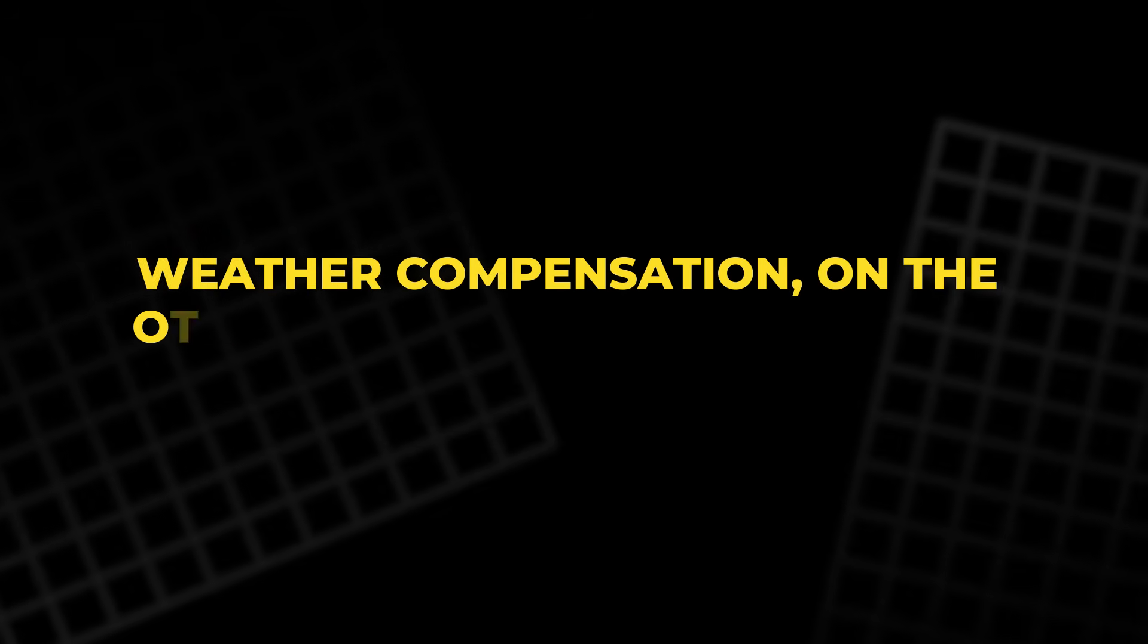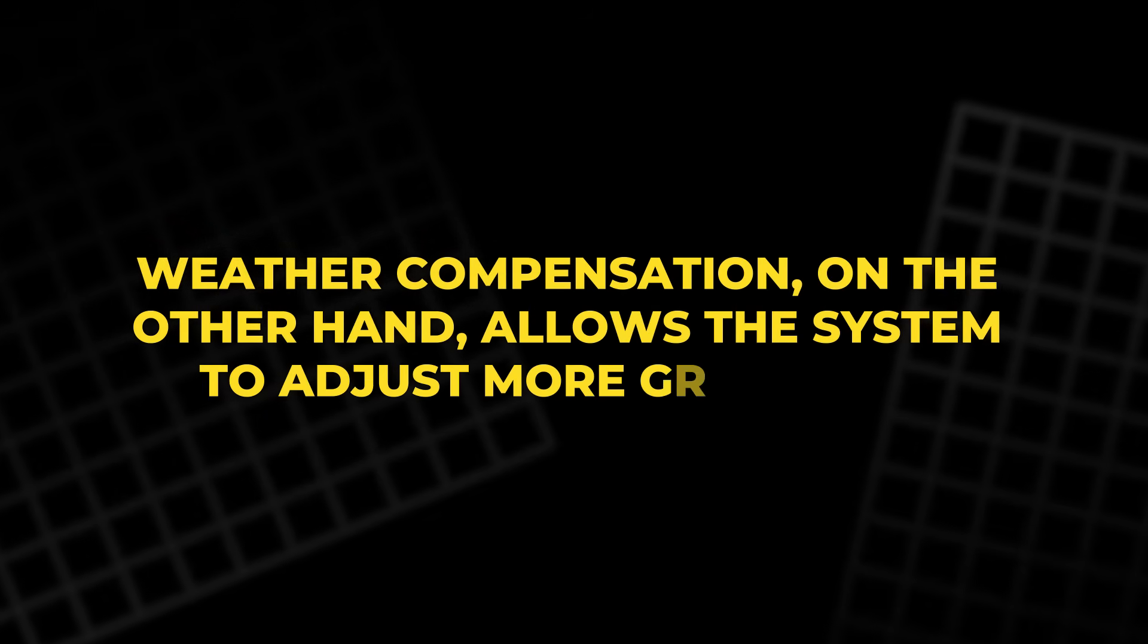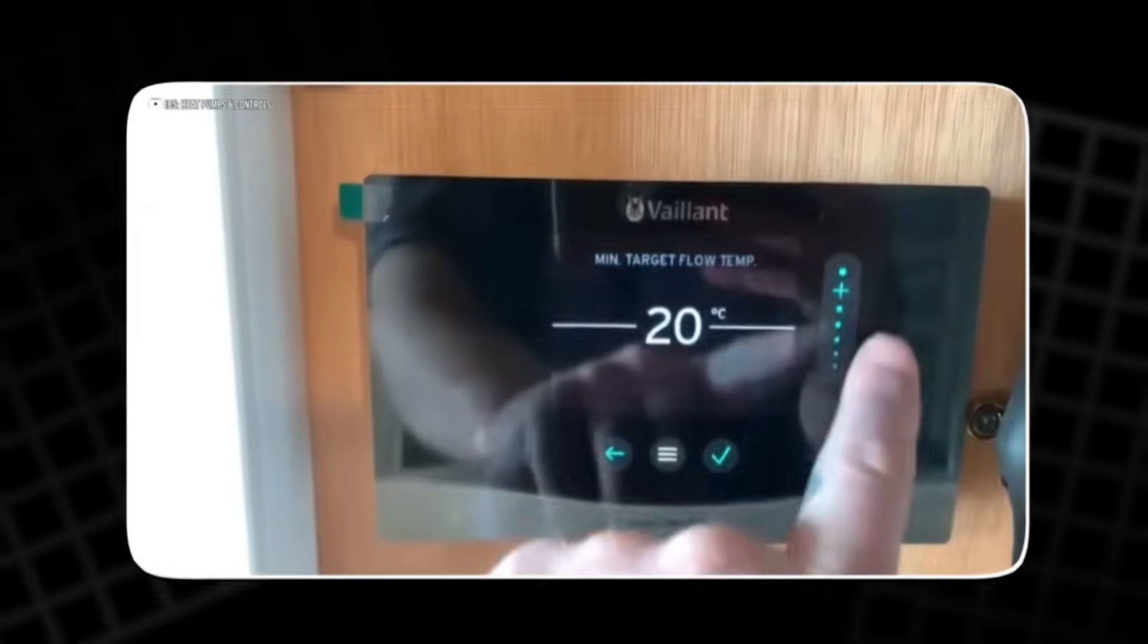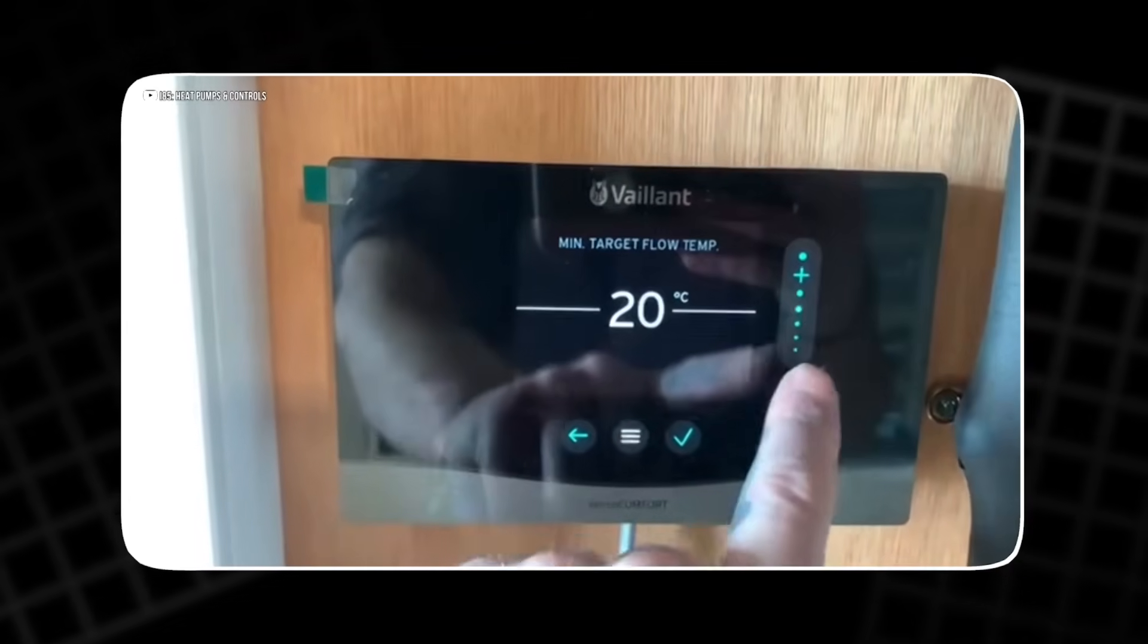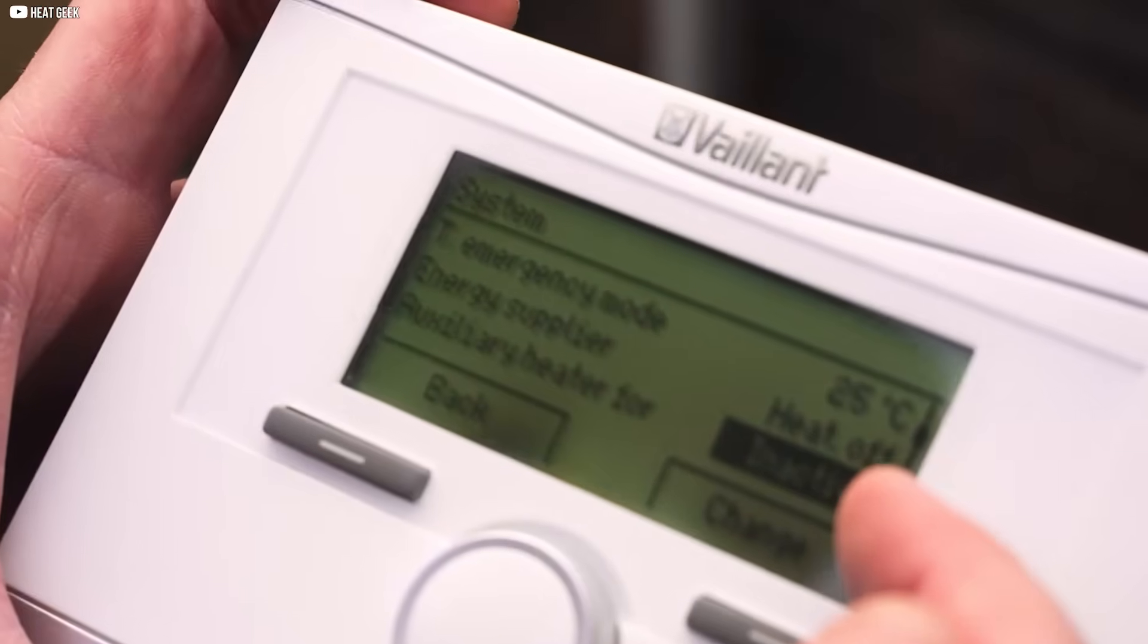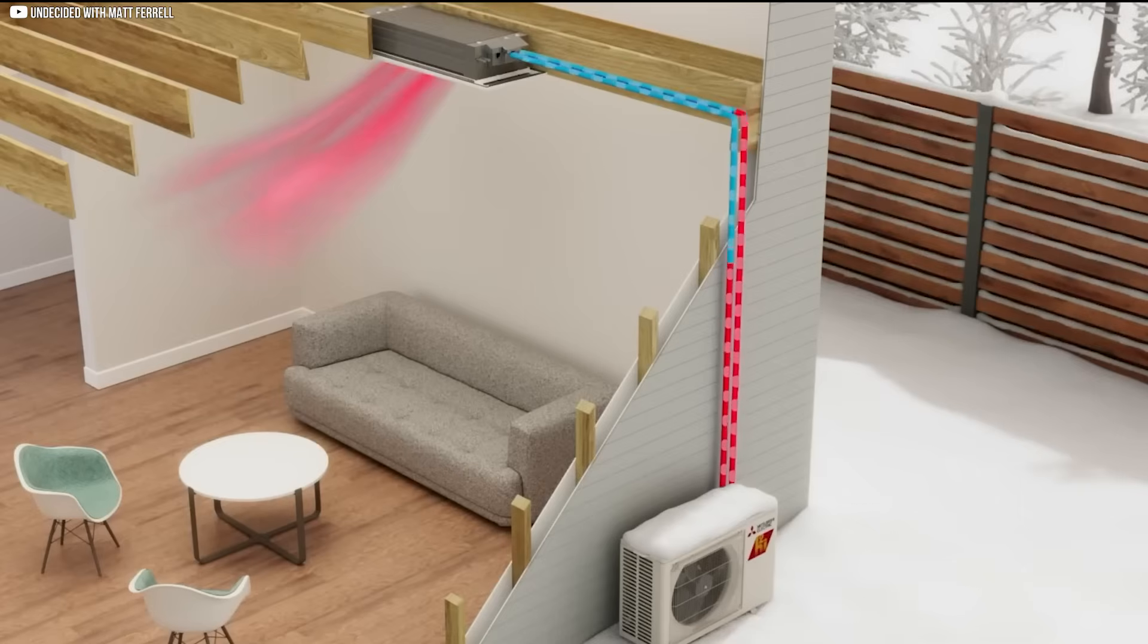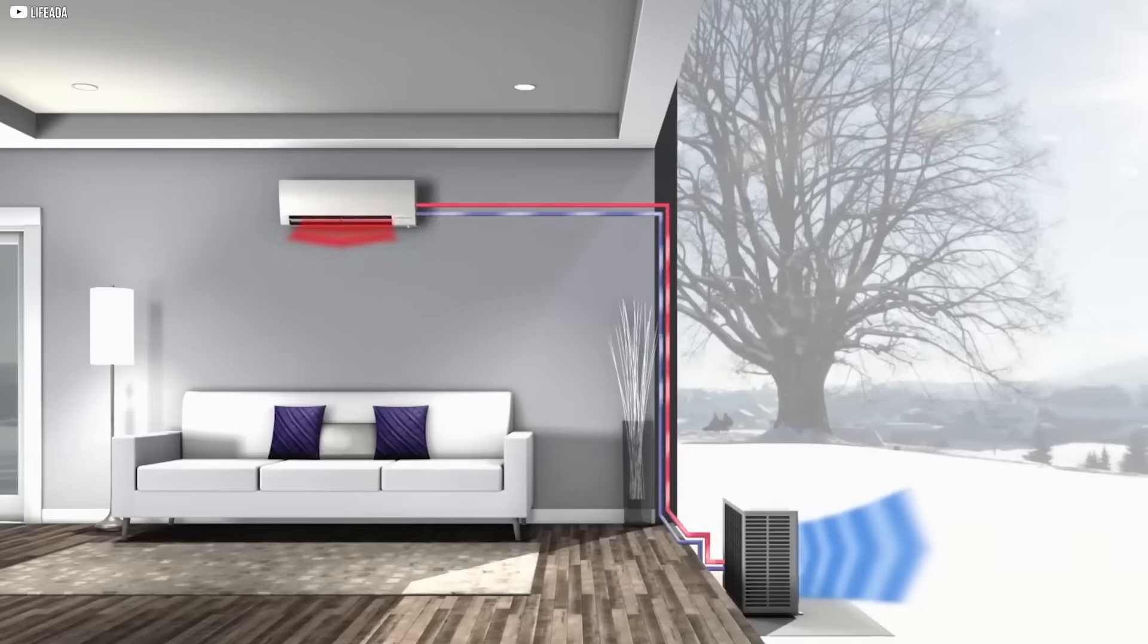Weather compensation, on the other hand, allows the system to adjust more gradually. Instead of turning off completely when the target temperature is reached, a modulating system uses sensors to monitor both indoor and outdoor temperatures, making small adjustments to the heating output. If the outdoor temperature drops quickly, the system will preemptively boost the heat, ensuring a smooth transition without large temperature fluctuations indoors.